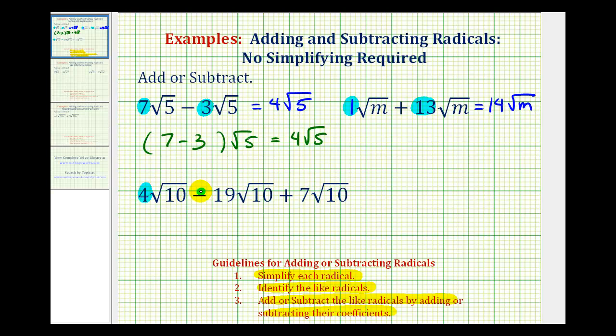And since 4 minus 19 is equal to negative 15 and negative 15 plus 7 is equal to negative 8, this simplifies to negative 8√10.